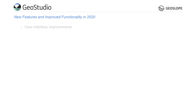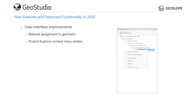GeoStudio 2020 includes multiple user interface improvements. Materials may now be assigned to geometries in the project tree. A context menu was added to the project explorer such that by right-clicking on an item in the list, users can easily access common commands.